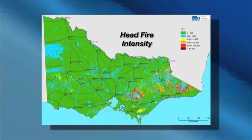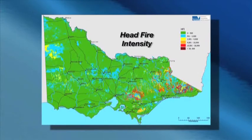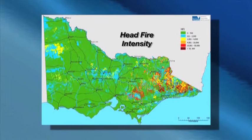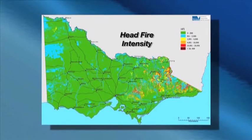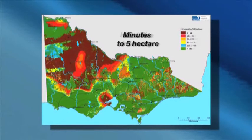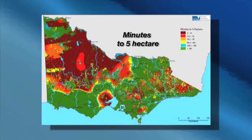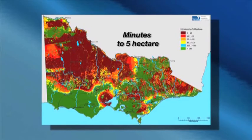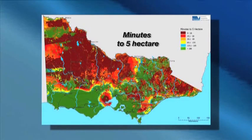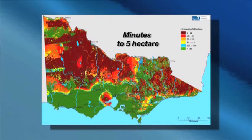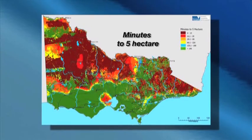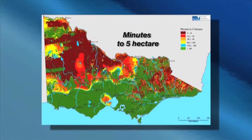State-wide fire behaviour maps show the expected fire behaviour in hourly steps for the next seven days across the state of Victoria. These are designed to inform fire managers of the likely fire intensities of going fires, or the potential for new fires to run.